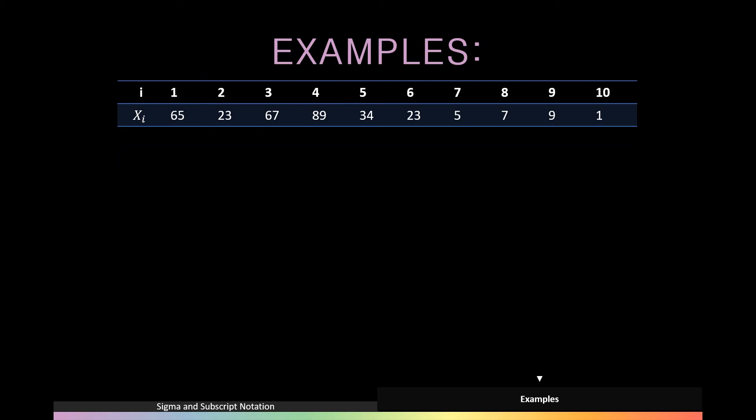Moving on to some examples, these examples are simply to iterate important rules that you should remember when working with summation. The first example is to calculate the summation of Xi squared from i is equal to 1 until 5. We would do this by squaring each individual value and then summing them together to get an answer of 18,320.